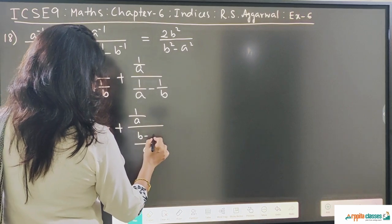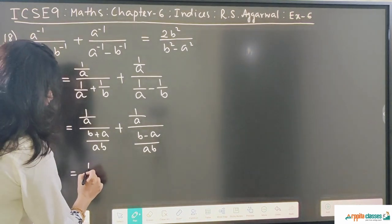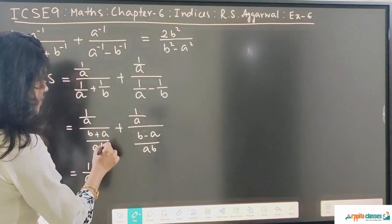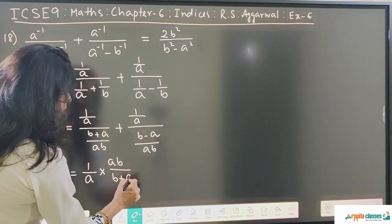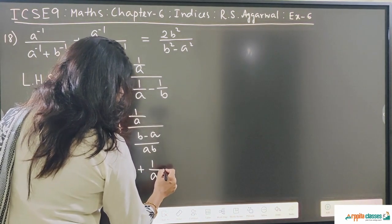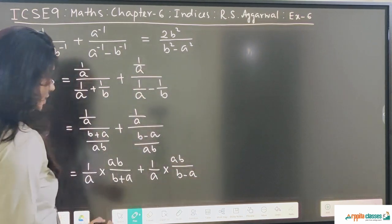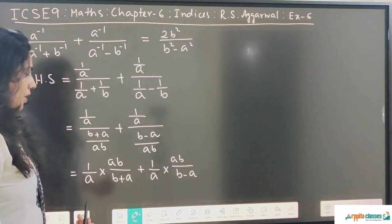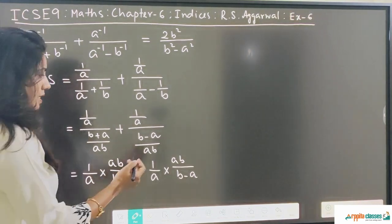So here we get b minus a. Now we will simply apply the rule of division: write the numerator as it is, put a multiplication sign in place of division, and reverse the denominator. So denominator ab will go up and b plus a will be here. There is a plus sign between. Same thing we will do for the second part also: 1 upon a with a multiplication sign, ab goes up and b minus a is here. We can cancel the a's, or use the property of indices — the bases are same so the powers can be subtracted.